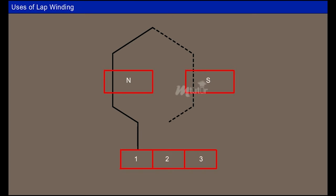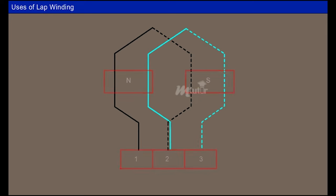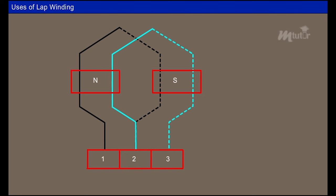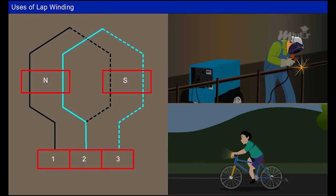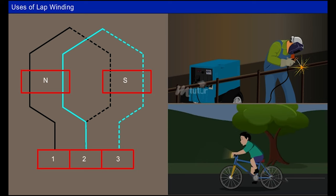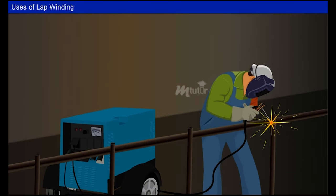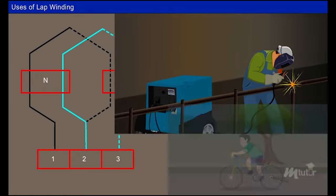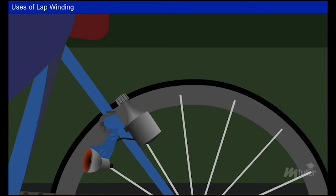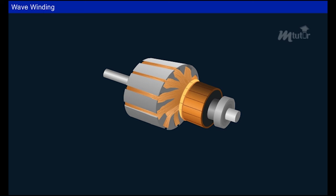In lap winding, the coils overlap and are parallel to each other, so the current capacity of each lap winding gets added, providing higher operating current. Therefore, this type of armature winding is used in applications requiring high current and low voltage. One such application is the welding generator machine, which produces higher current for welding purposes. A dynamo is another application producing high current, normally seen in bicycles.